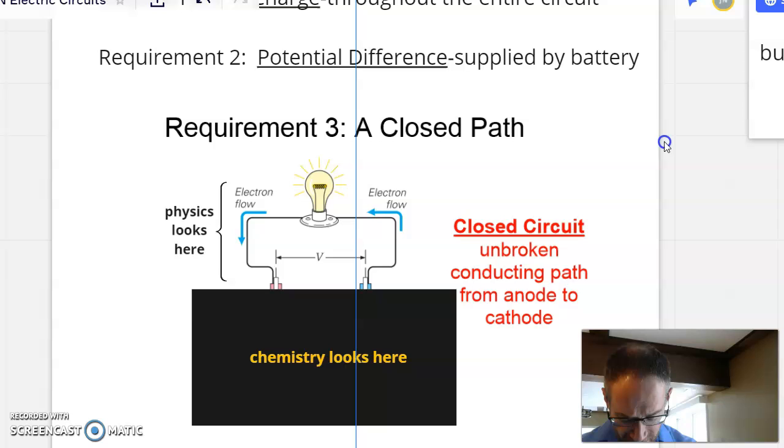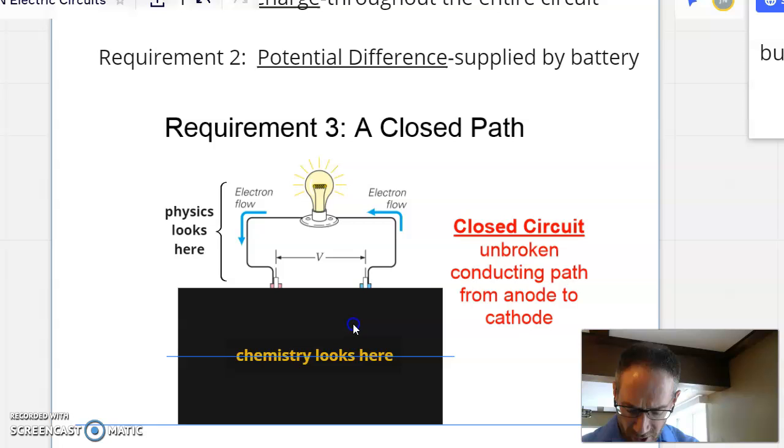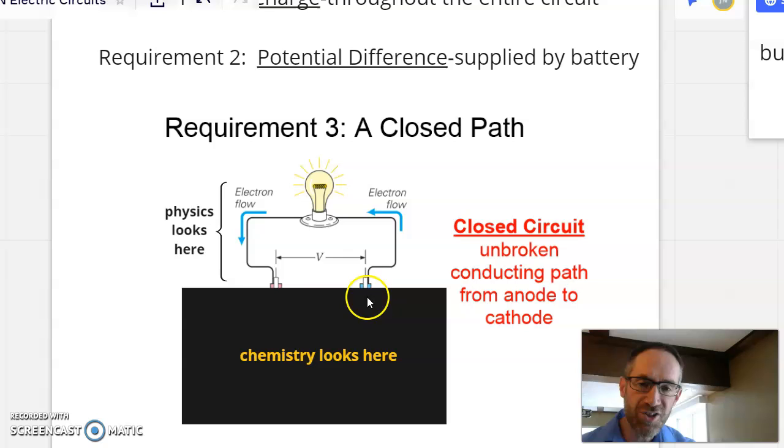Now inside of the battery, we kind of look at it as an abstraction. Chemistry types are going to look inside of there and look at that chemical reaction that's happening in there, which is great, and I think is very interesting. But for our class, we're going to be focused on what happens outside of there. What can you actually do with this? Given that you had two dissimilar metals in there and they're being oxidized and reduced differently.